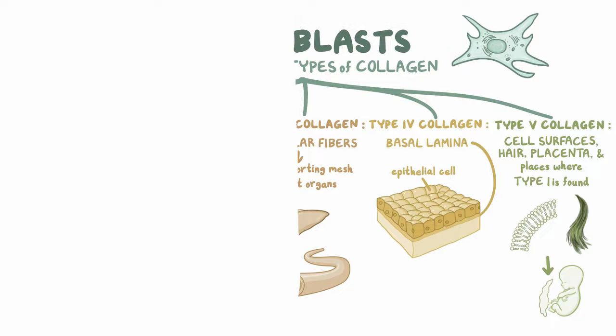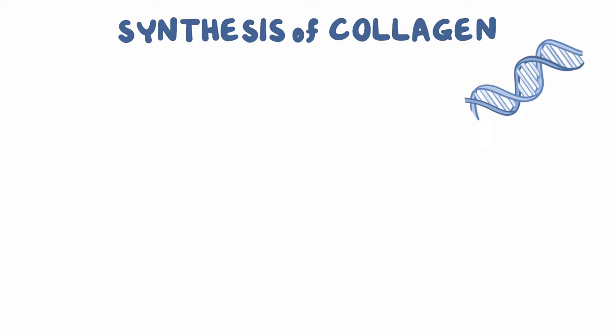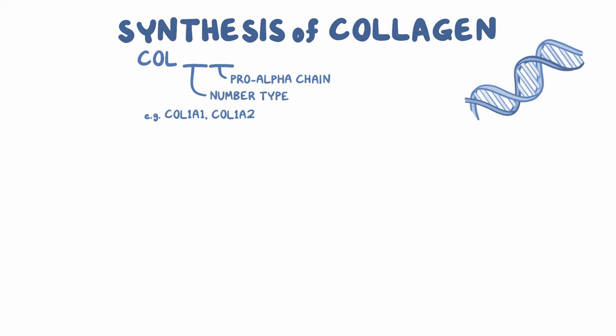The synthesis of collagen, like any other protein, starts with the genes. The name of the genes that encode for a collagen type usually starts with the prefix COL, followed by the collagen number type, and the pro-alpha chain it encodes. There are many genes that encode for the different types of collagen, like COL1A1, COL1A2, COL3A1, COL5A1, and COL5A2.